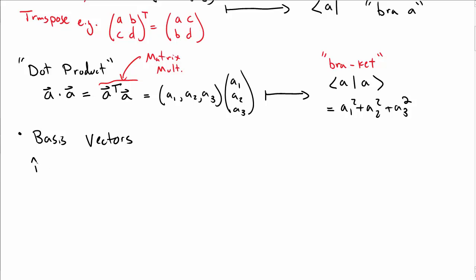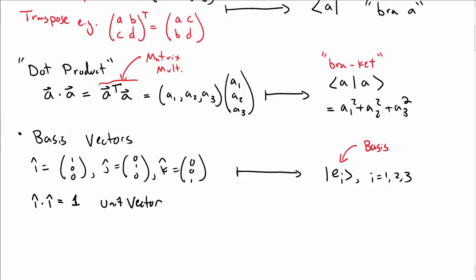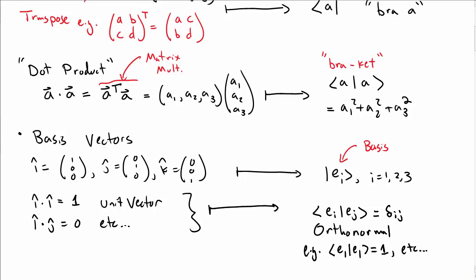Let's talk about basis vectors. In 3D basis vectors we typically have the i-hat, j-hat, and k-hat basis vectors. And now we're going to be working with basis vectors I'm going to label as ket e-i, where i runs from 1 to 3, and so that's going to be my basis in Dirac notation. If I take i-hat dot i-hat I get 1, which is the symbol of a unit vector. And if I take i-hat dot j-hat I get 0, and so on and so forth. In Dirac notation we would say e-i, e-j bra ket is delta i-j, that's the Kronecker delta, and so we'd say this basis is called orthonormal.